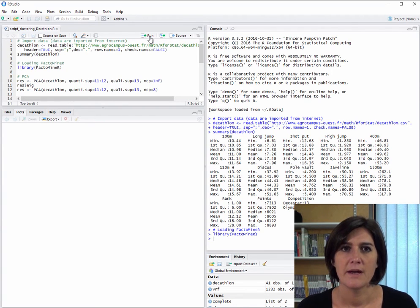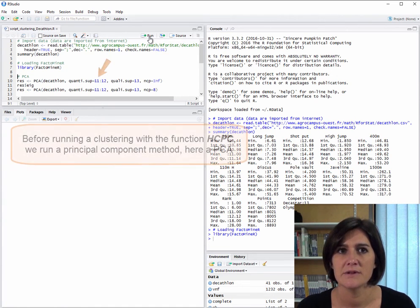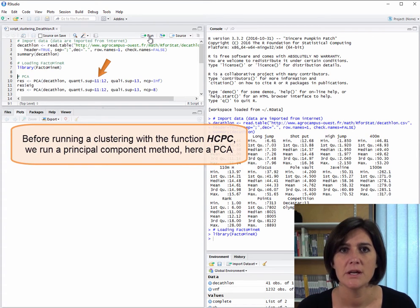Next, let's load the FactoMiner library. Ok, that's done. Now we'll run a PCA on this dataset. We'll make sure that the function understands that the 11th and 12th variables are supplementary and quantitative and that the 13th is supplementary and qualitative. We can also signal that we want to keep all the axes by putting ncp equal inf.